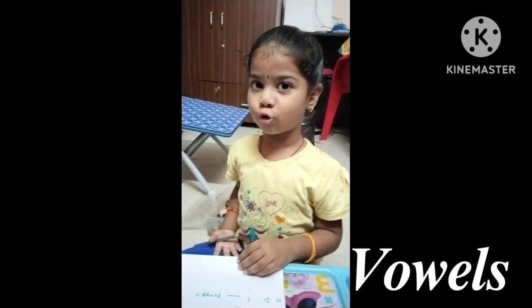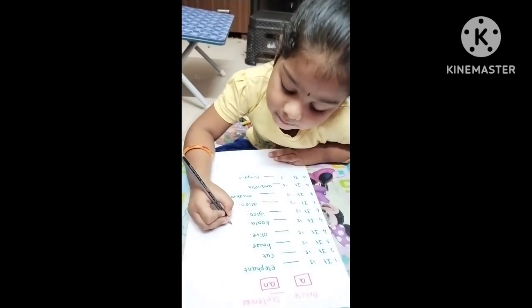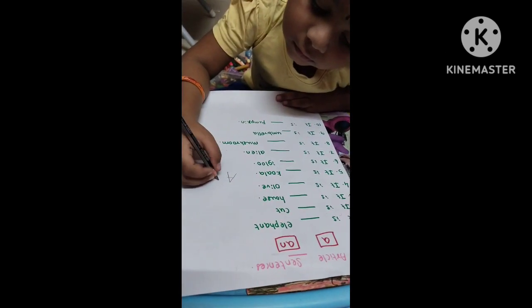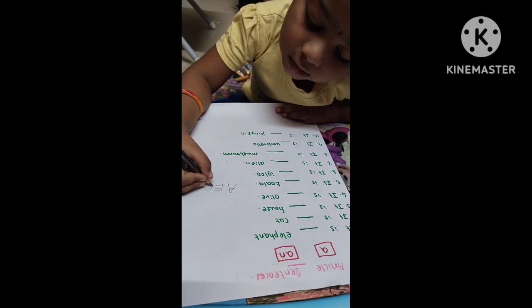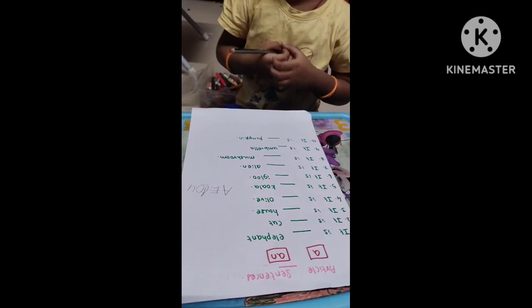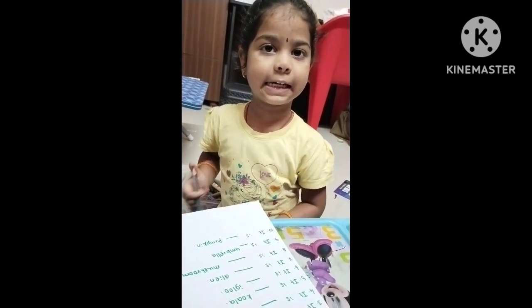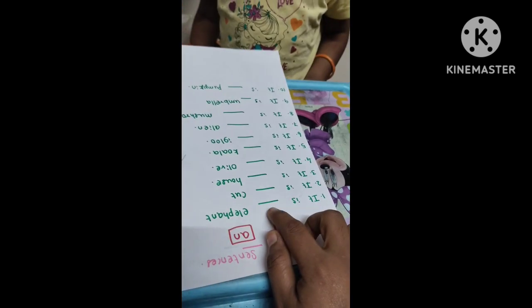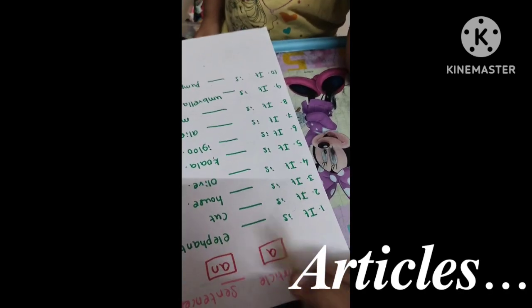A-E-I-O-U. A-E-I-O-U. A-E-I-O-U. You can write A-E-I-O-U. Okay. Articles. Okay. Articles. Now, in this dash, A and A — we will put it in the name of articles. Okay? It's called articles. Okay?